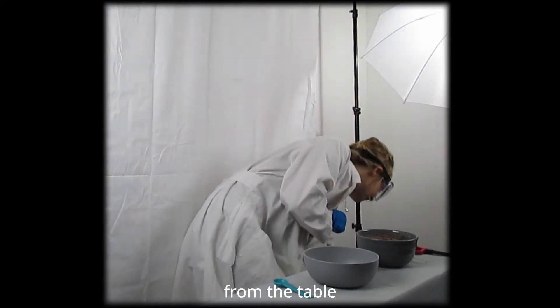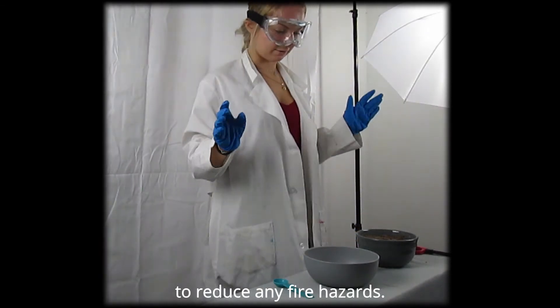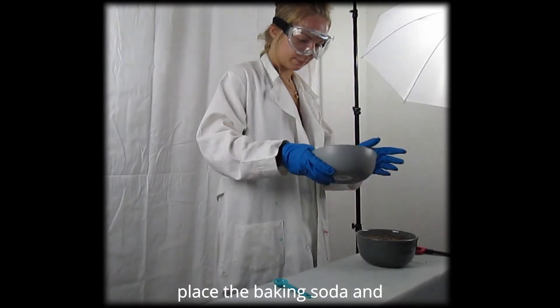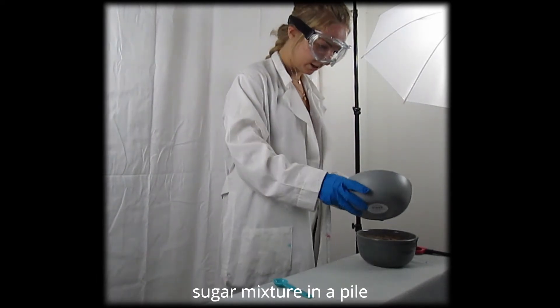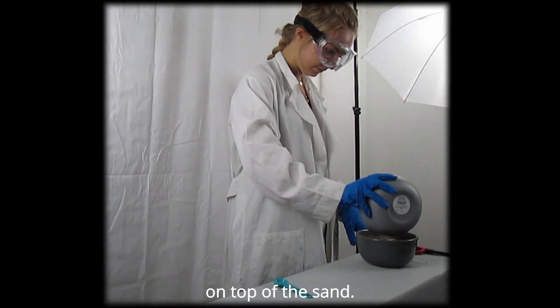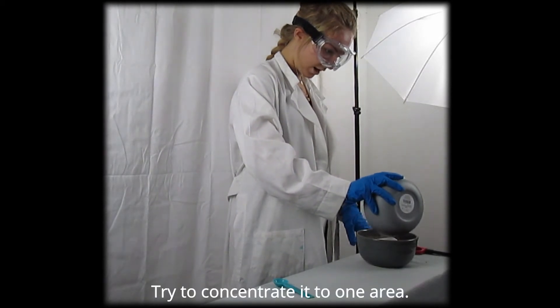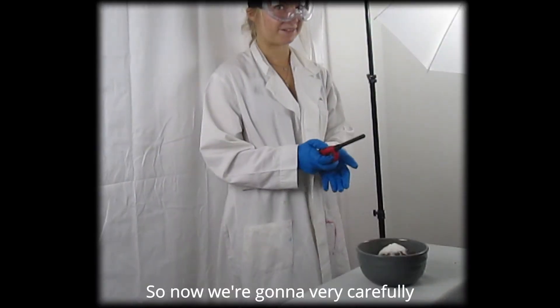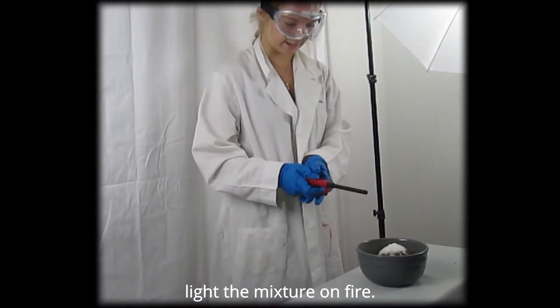And then, remove it from the table to reduce any fire hazards. Okay, and now we're going to place the baking soda and sugar mixture in a pile on top of the sand. Try to concentrate it to one area. Now we're going to very carefully light the mixture on fire.